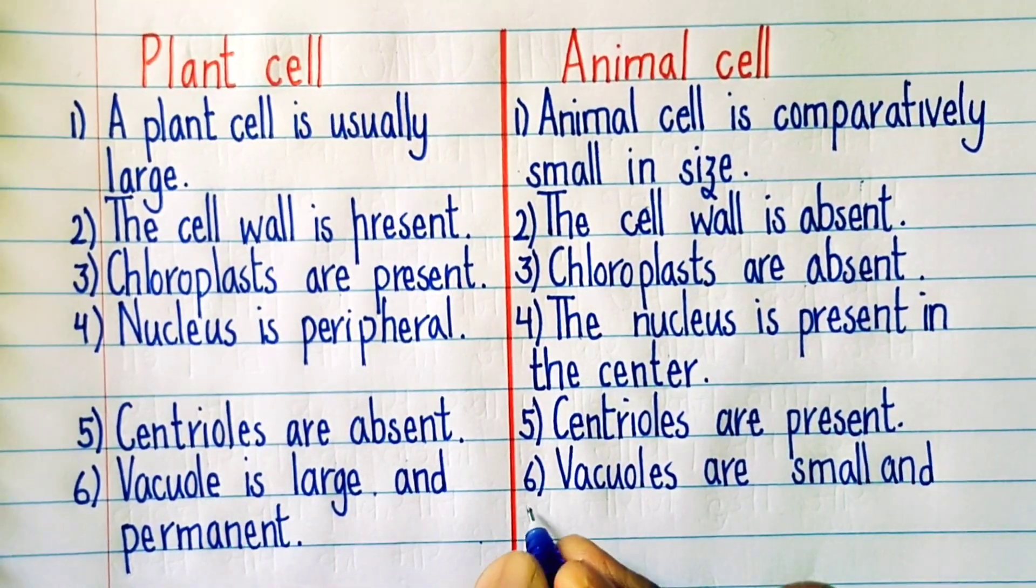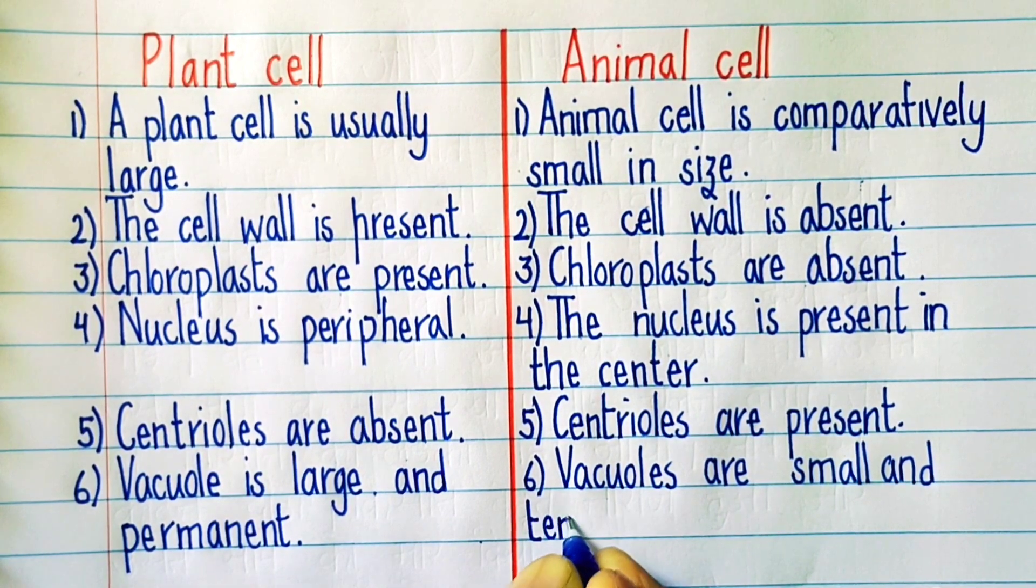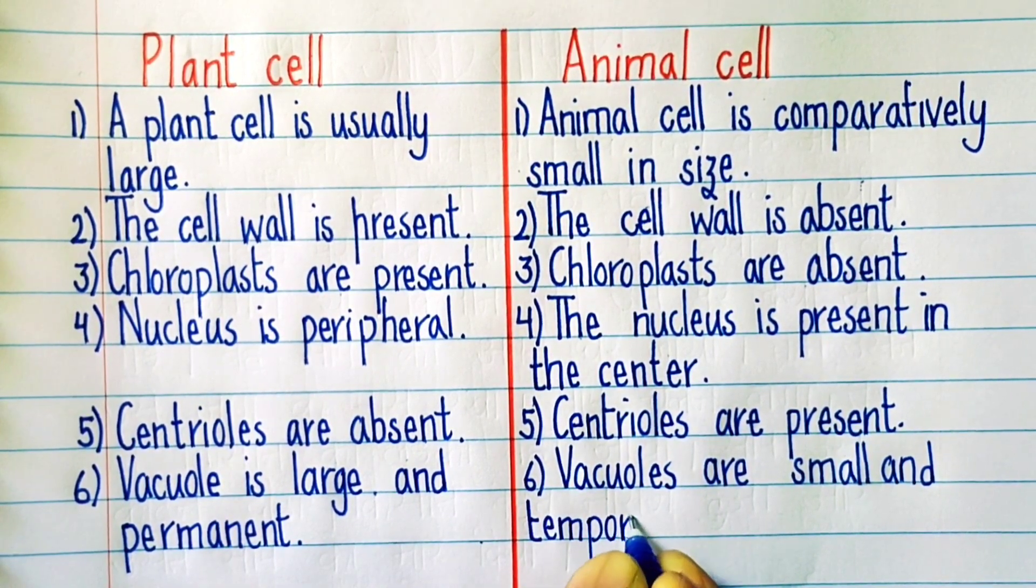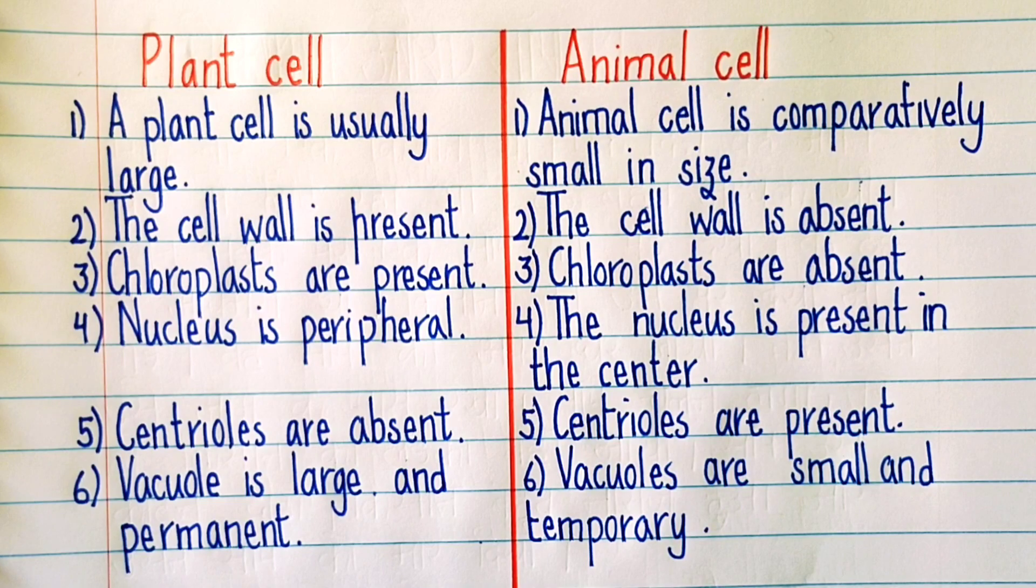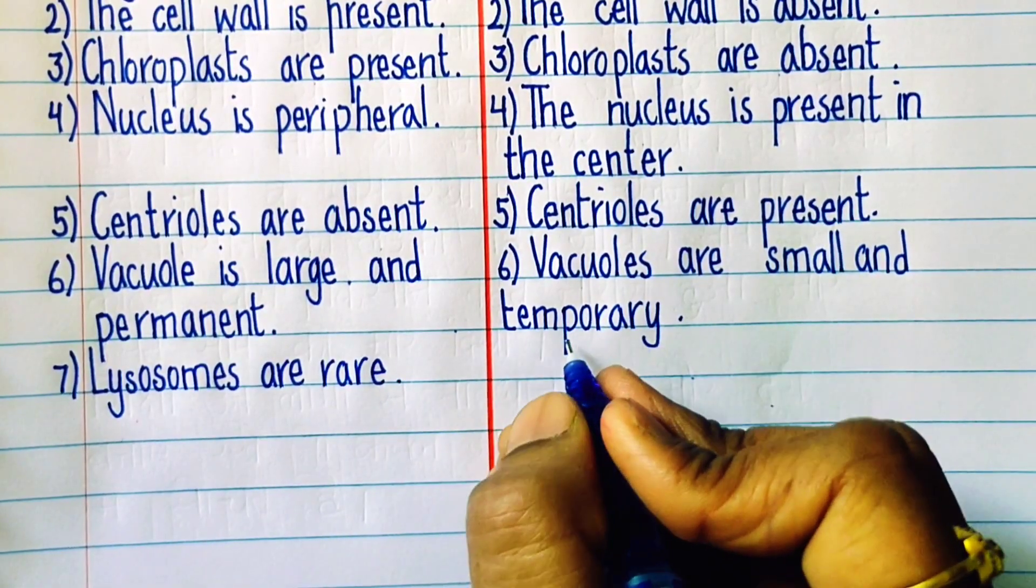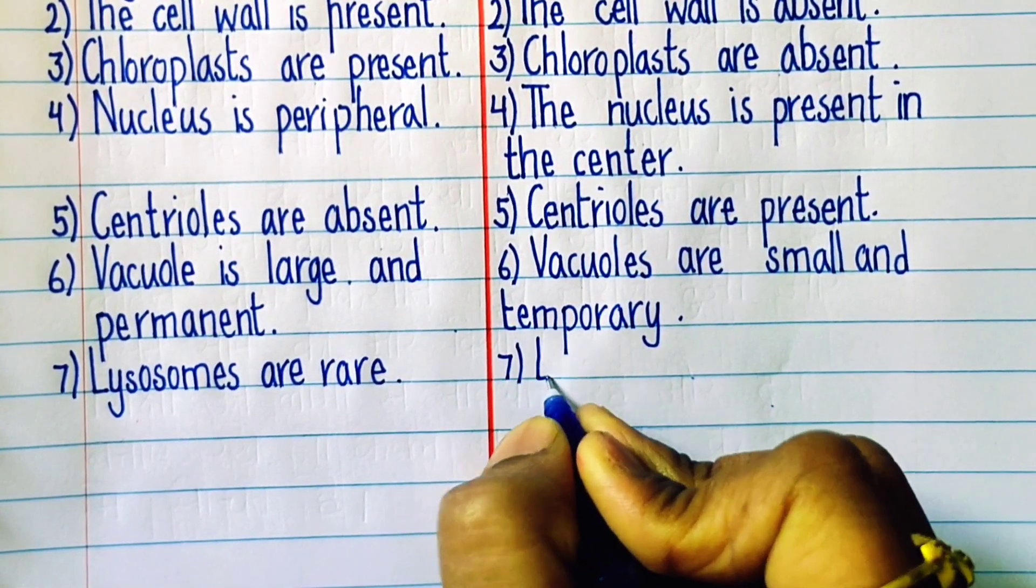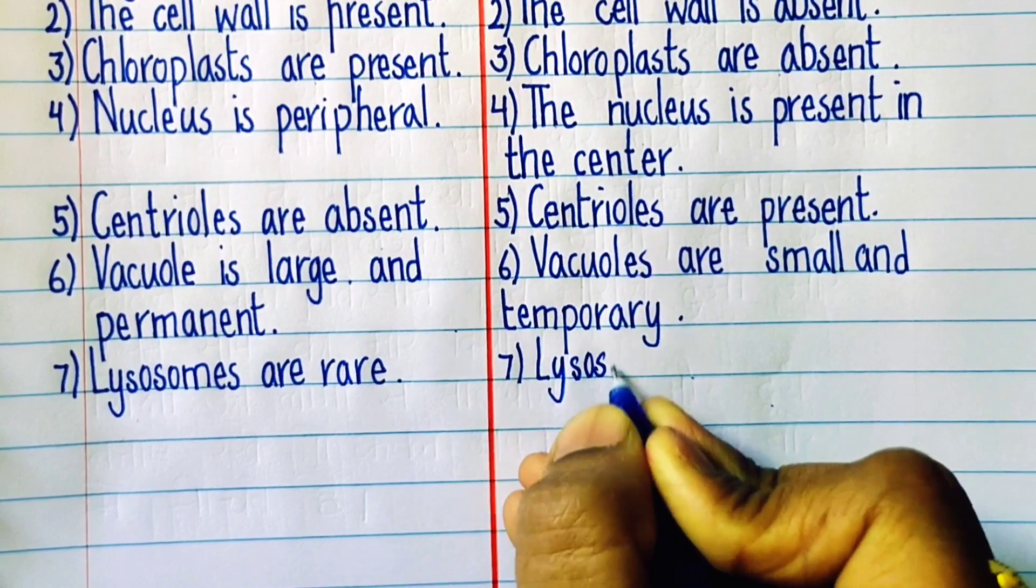Sixth point: In plant cells, there is generally a single vacuole and it is large and permanent. On the other hand, in animal cells, the vacuoles are small and they are temporary and generally they are more than one.